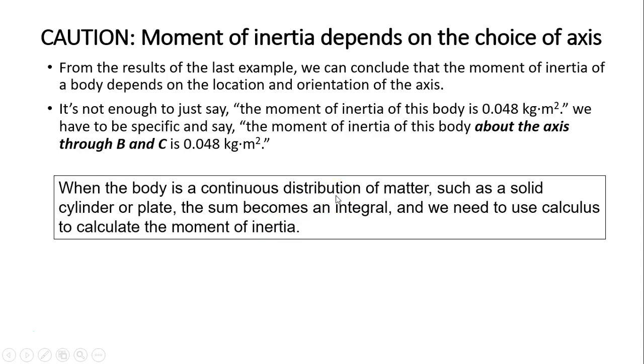Question: moment of inertia depends on the choice of axis. From the results of the last example, we can conclude that the moment of inertia of a body depends on the location and orientation of the axis. It's not enough just to say the moment of inertia of this body is 0.048 kilogram-meters squared. You have to be specific and say the moment of inertia of this body about axis through B and C is 0.048 kilogram-meters squared.